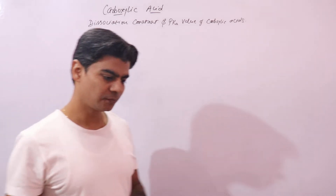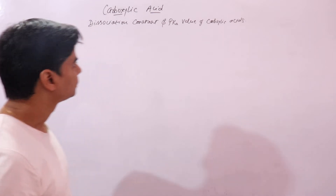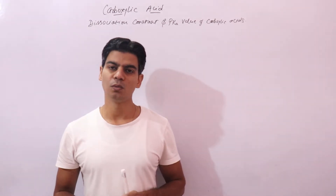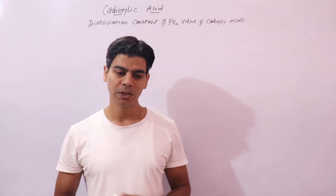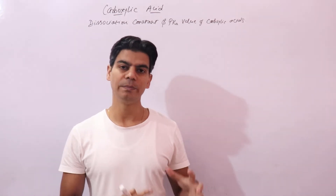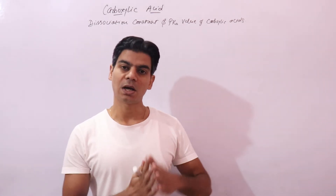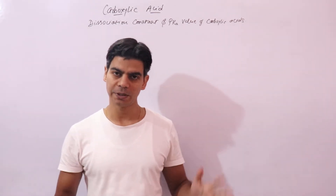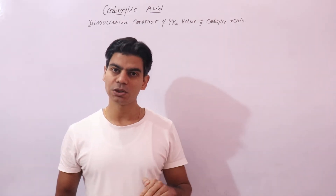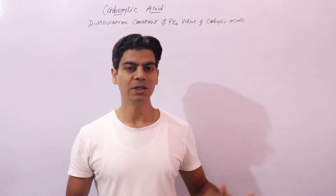The dissociation constant is taken from the law of mass action. When an acid is added to water or when an acid ionizes, it releases hydrogen ions. More hydrogen ions it releases, more would be its strength. So acid strength is directly proportional to its hydrogen ion concentration or hydronium ion concentration in solution. We will express this in terms of equilibrium constant and pKa value.